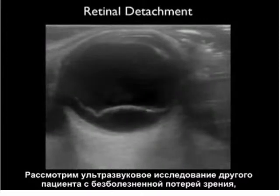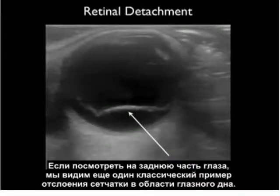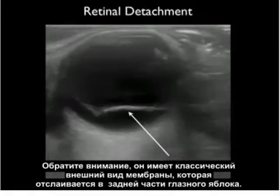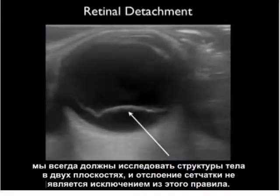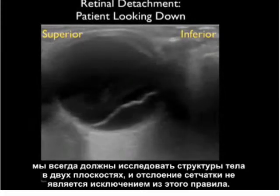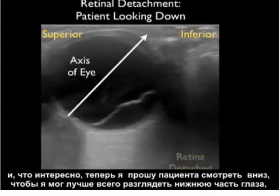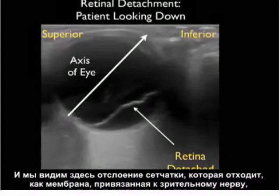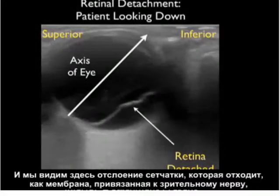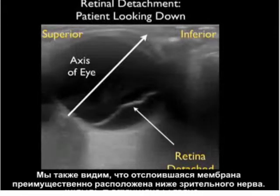Here's a bedside ultrasound from another patient with painless loss of vision. Looking into the back of the eye, we see another classic appearance of a retina detached off the back of the eye — a classic membrane type appearance that layers out in the posterior eyeball. As noted in the earlier part of this module, we should always investigate body structures in two planes, and retinal detachments are no exception. Placing the probe in a vertical orientation with the patient looking down, we can best see the inferior aspect — confirming an inferior detachment predominantly located inferior to the optic nerve.